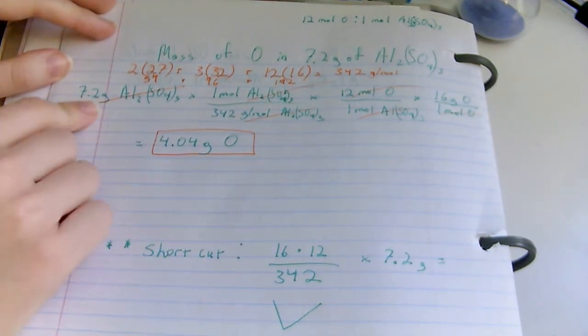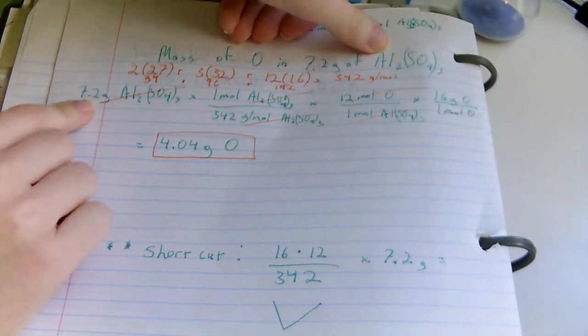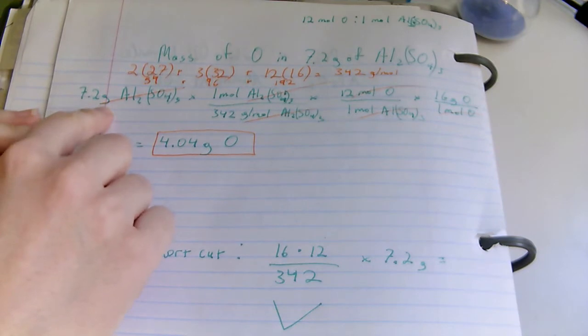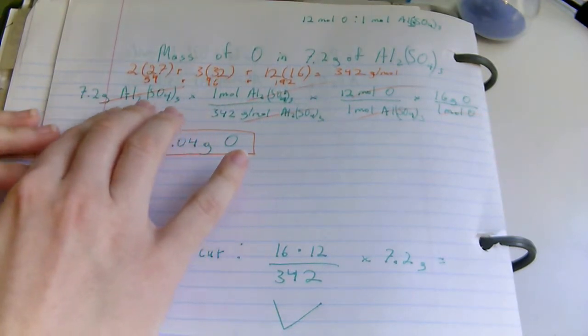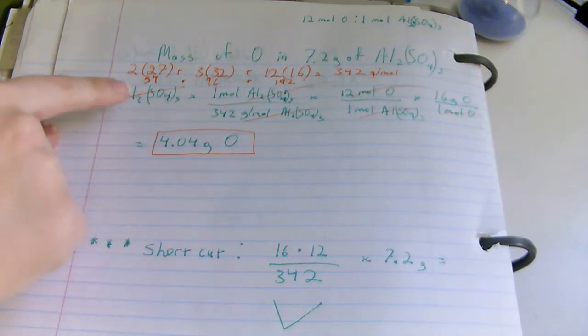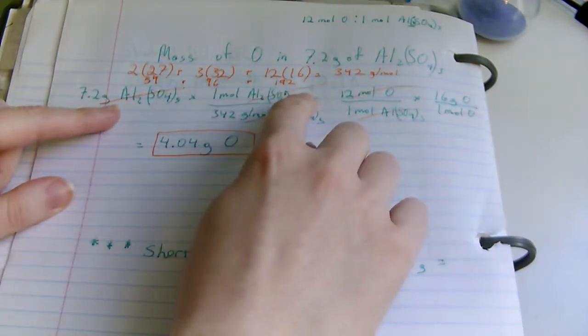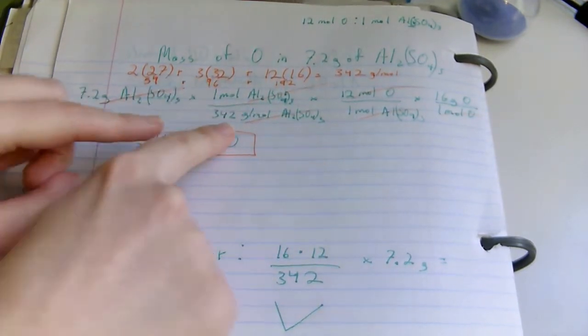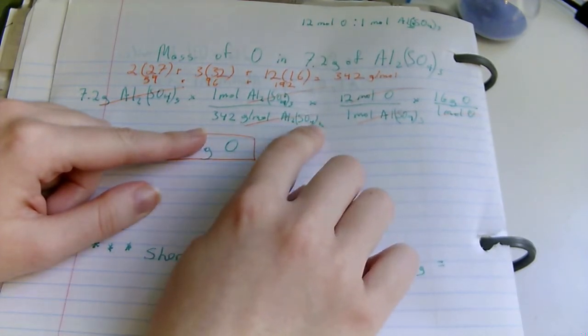Setting everything up, we are given 7.2 grams, so it's again given mass divided by the total mass. Setting it up, 7.2 grams of aluminum sulfate. Always write down the whole thing if you're just getting started because you want to see your units cancel out. This relates to 1 mole of aluminum sulfate, which in turn relates to 342 grams per mole of aluminum sulfate.